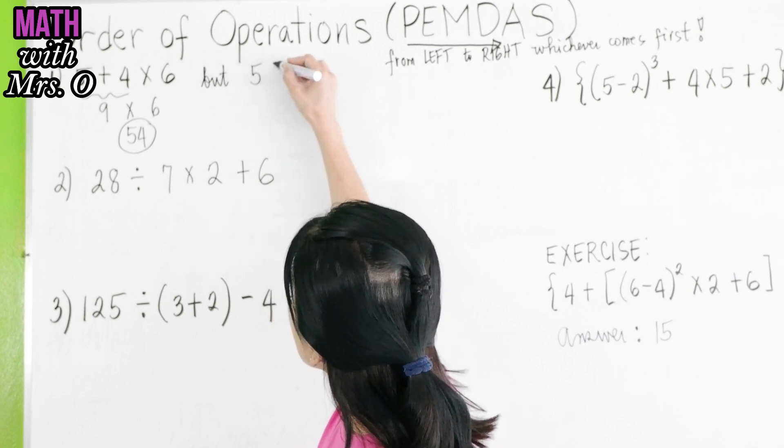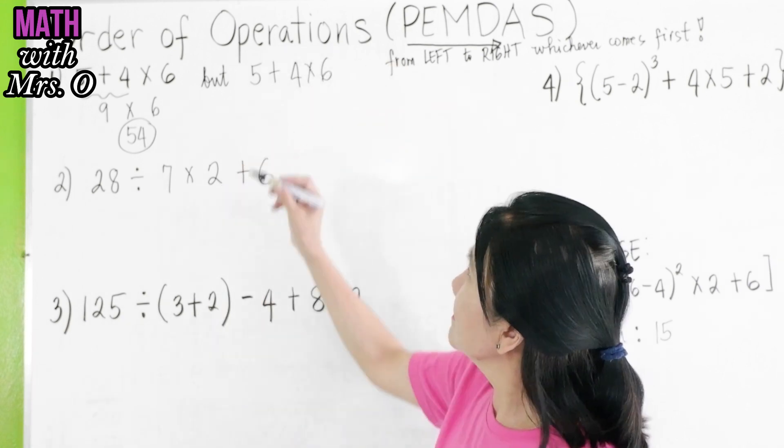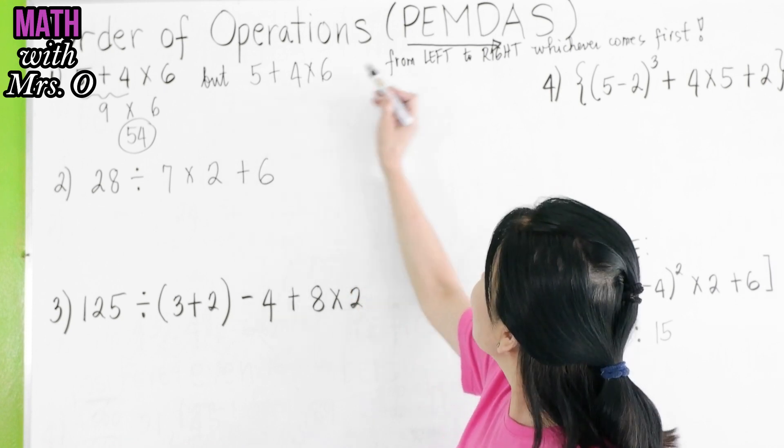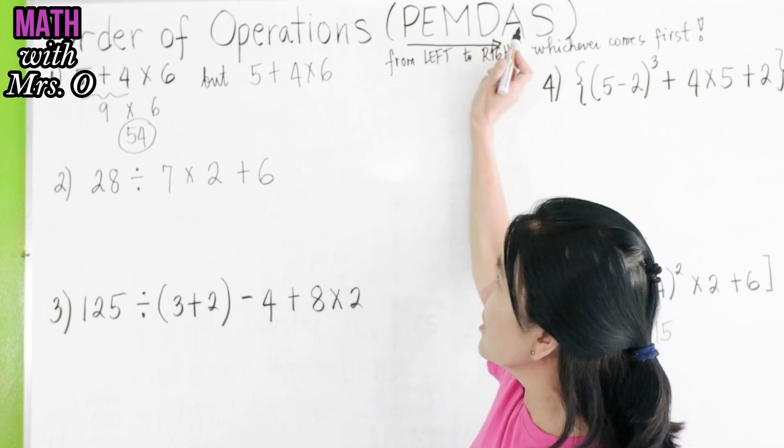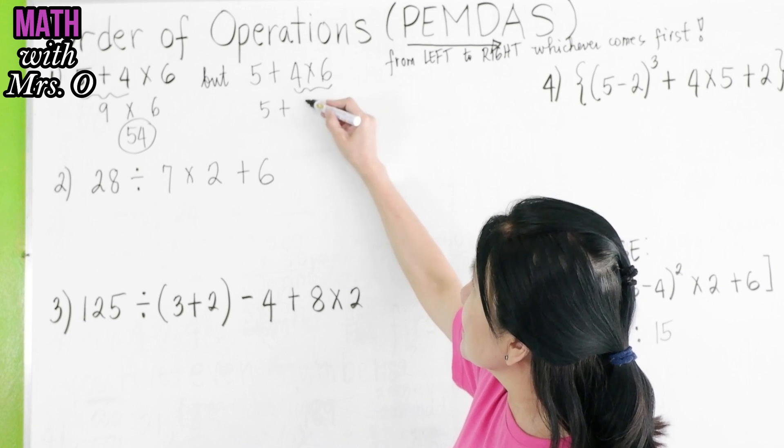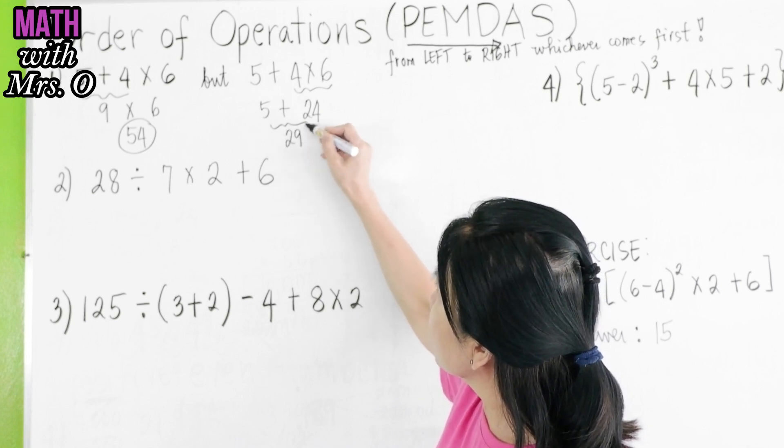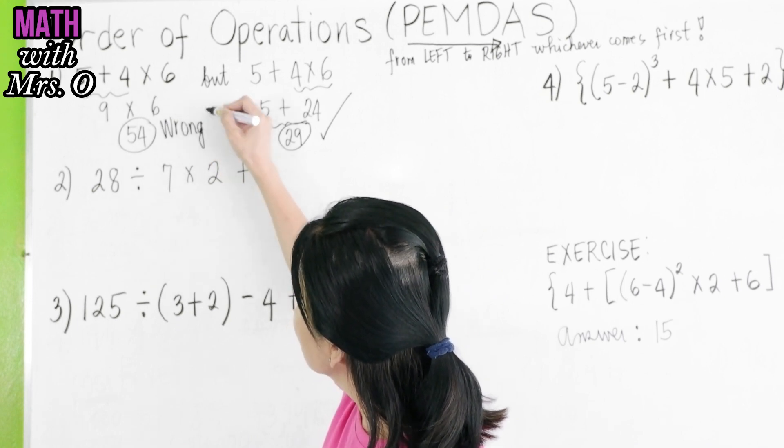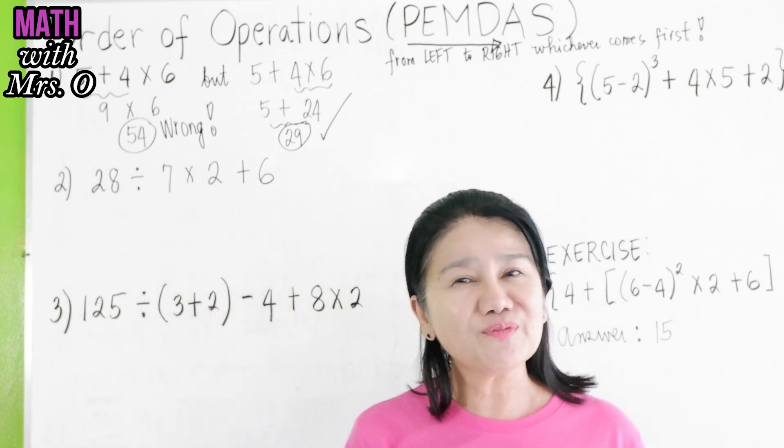But, if we go this way, 5 + 4 × 6, and follow the PEMDAS, do you add 5 + 4 if you follow the PEMDAS? No. In the PEMDAS, multiplication and division first, before addition and subtraction. So, you have to do this first. You get 5 + (4 × 6 is 24). Then, add this: 5 + 24 is 29. This is the correct answer. And this is wrong. So, if you don't follow the PEMDAS, you will get the wrong answer. Always follow the PEMDAS.